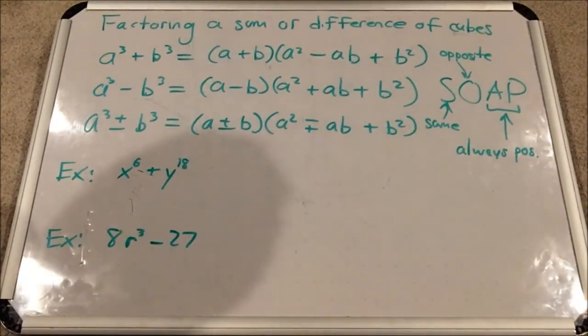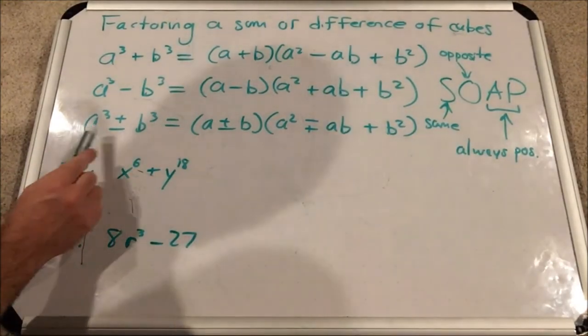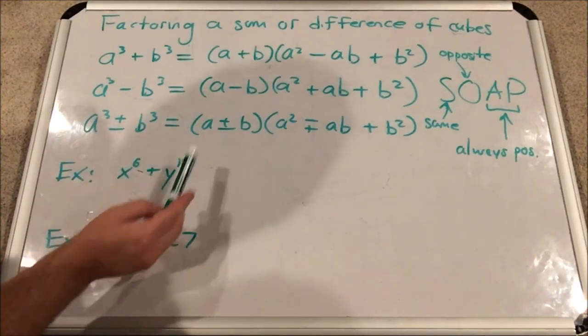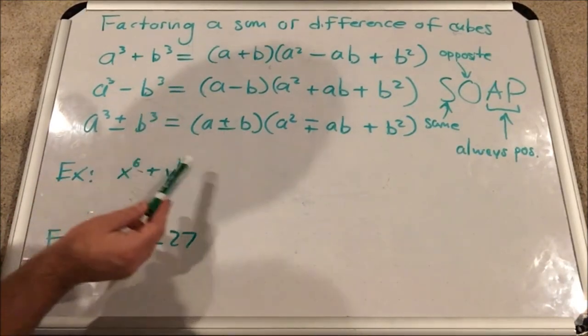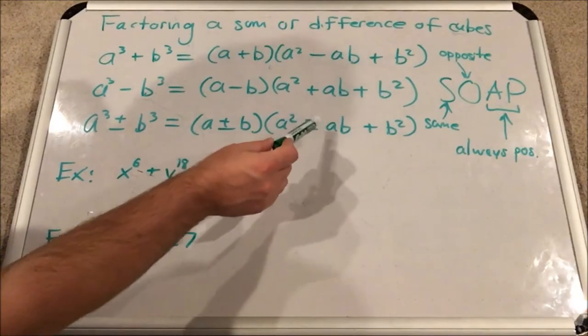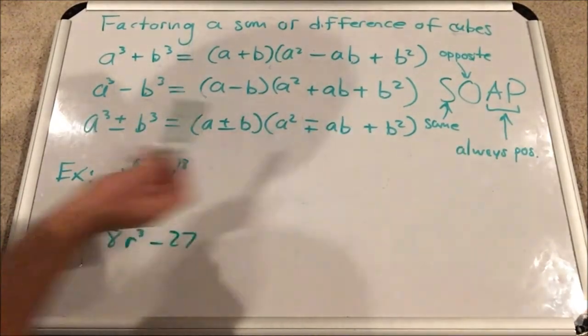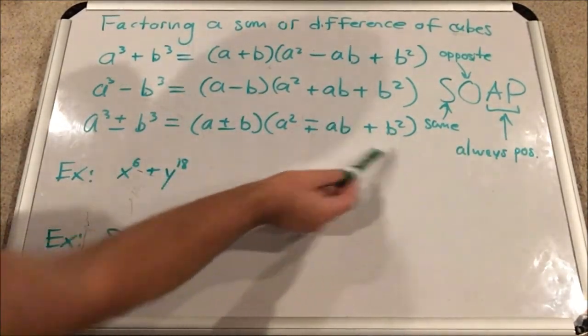If we were to combine these two rules into one, we would get the following: a cubed plus or minus b cubed would equal a plus or minus b times a squared minus or plus, showing the sign changed, the product of ab plus b squared.